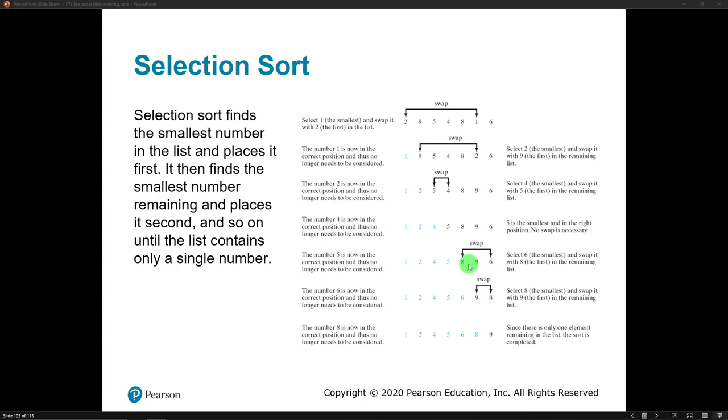Of the three remaining numbers, 6 is the smallest, so it swaps places with the 8. And again, we do it with the 9 and the 8. And finally, we end up with a sorted list. So that's how it works.